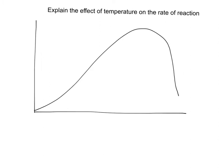In an explain question, you've got to tell the examiner why the curve is that shape. Initially the rate of reaction is increasing. This is because there's more kinetic energy, there's more enzyme-substrate collisions, more substrate is able to bind to the active site, therefore the rate of reaction is increasing. There's more product being made.